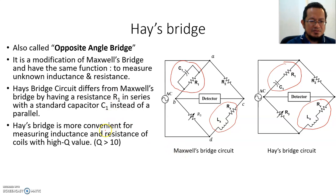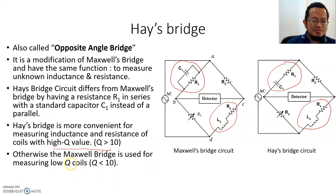Because of this change in configuration, Hay's Bridge is more convenient and much better for measuring inductance and resistance of coils with high Q values. Maxwell's Bridge is limited to measuring coils with a Q factor of less than 10, but Hay's Bridge can be used to measure inductance and resistance with higher Q values — more than 10.